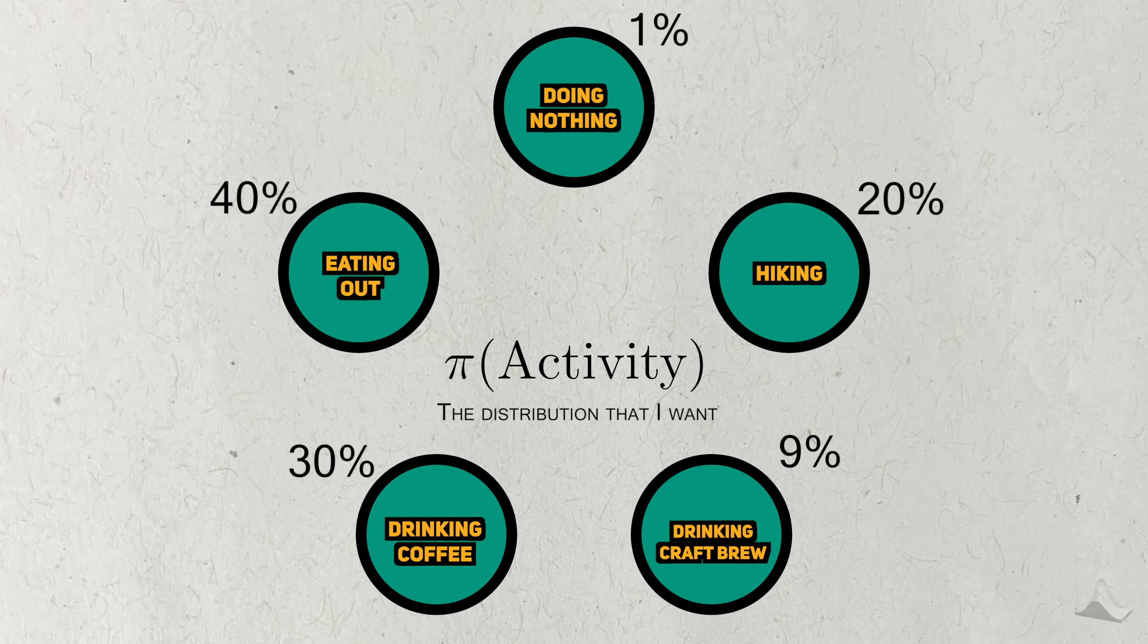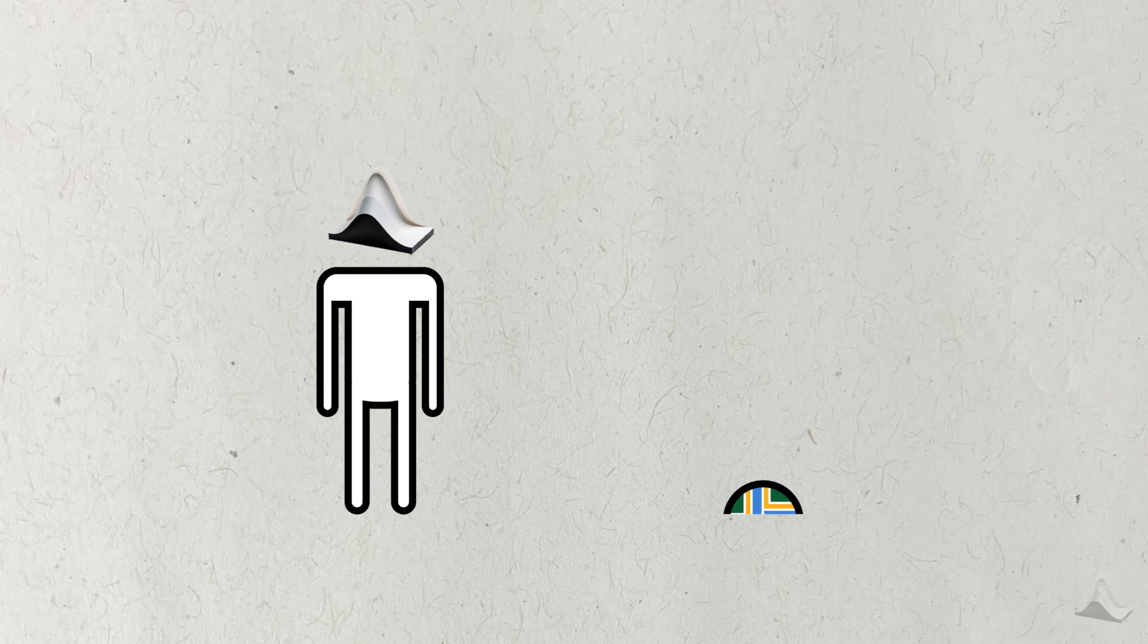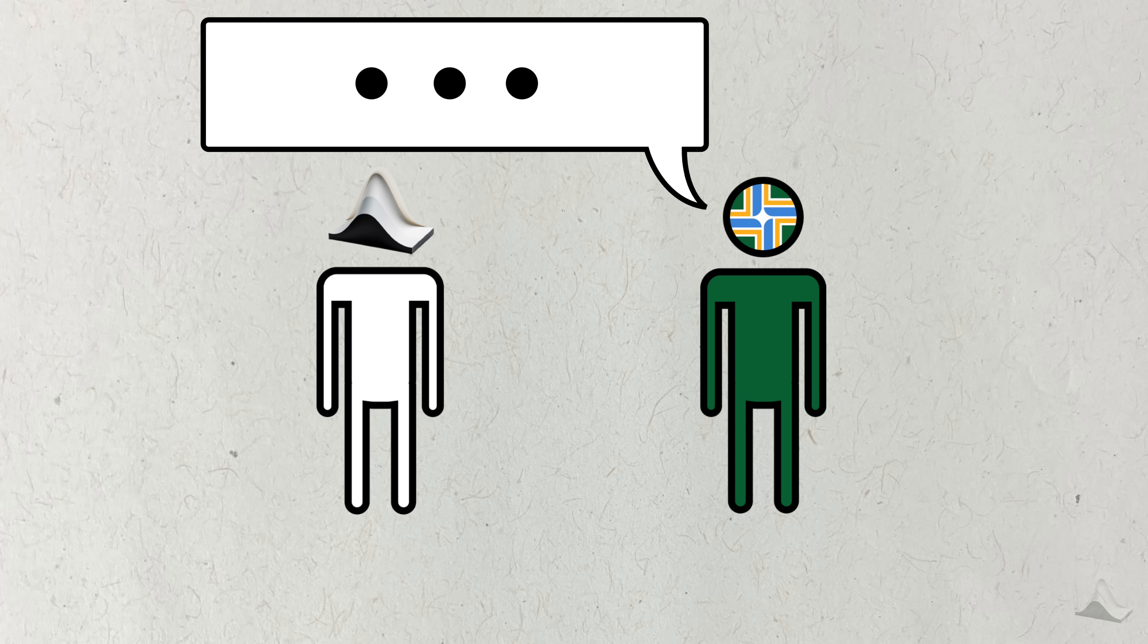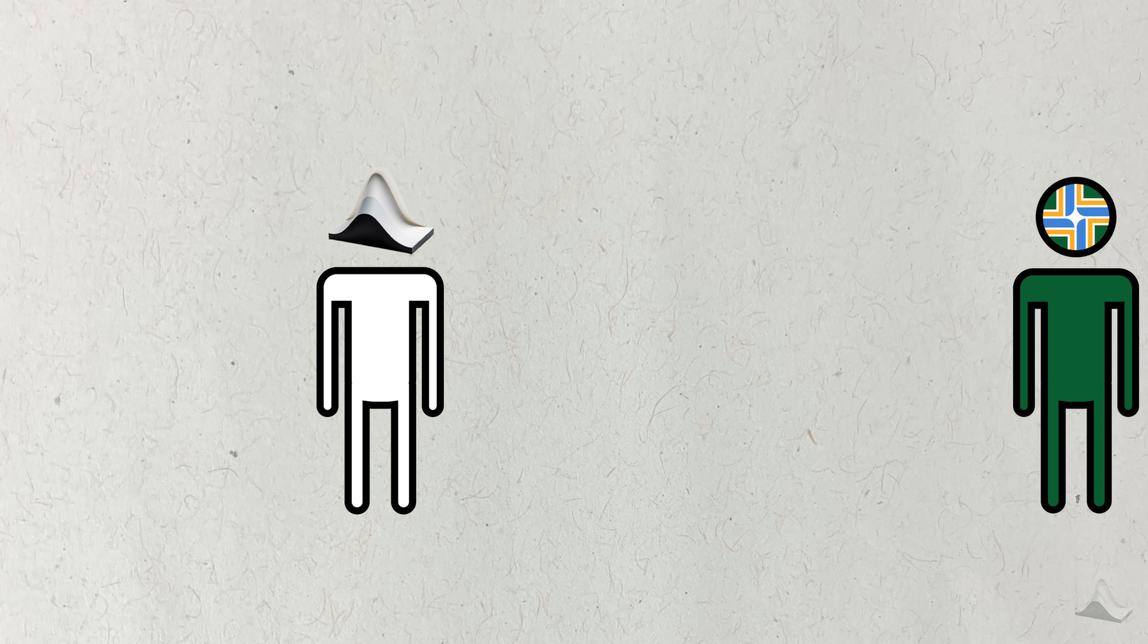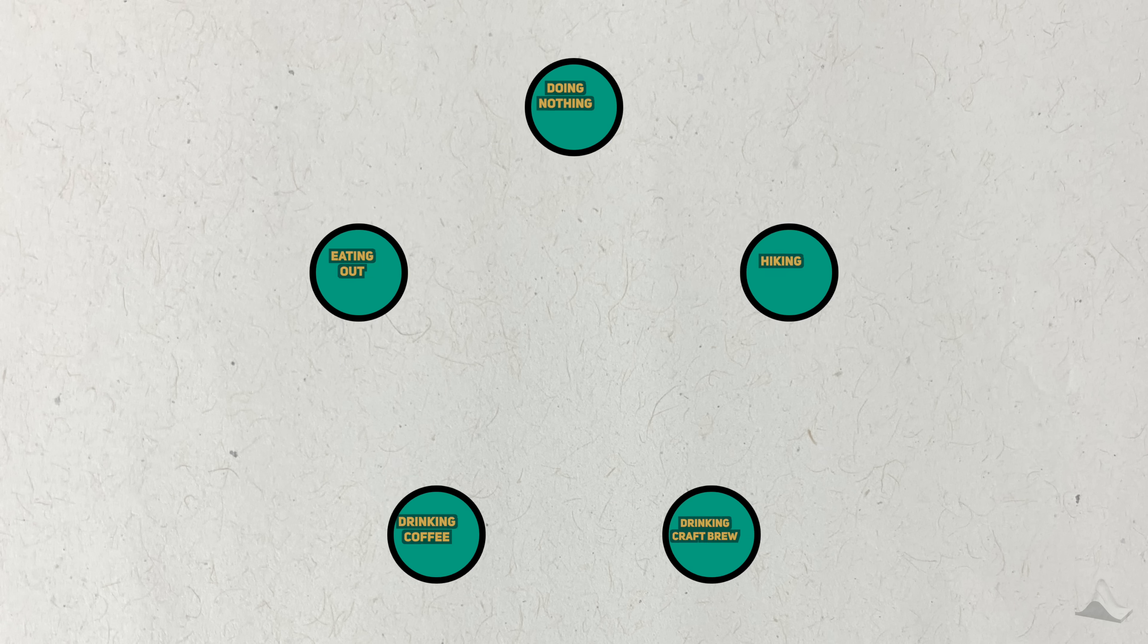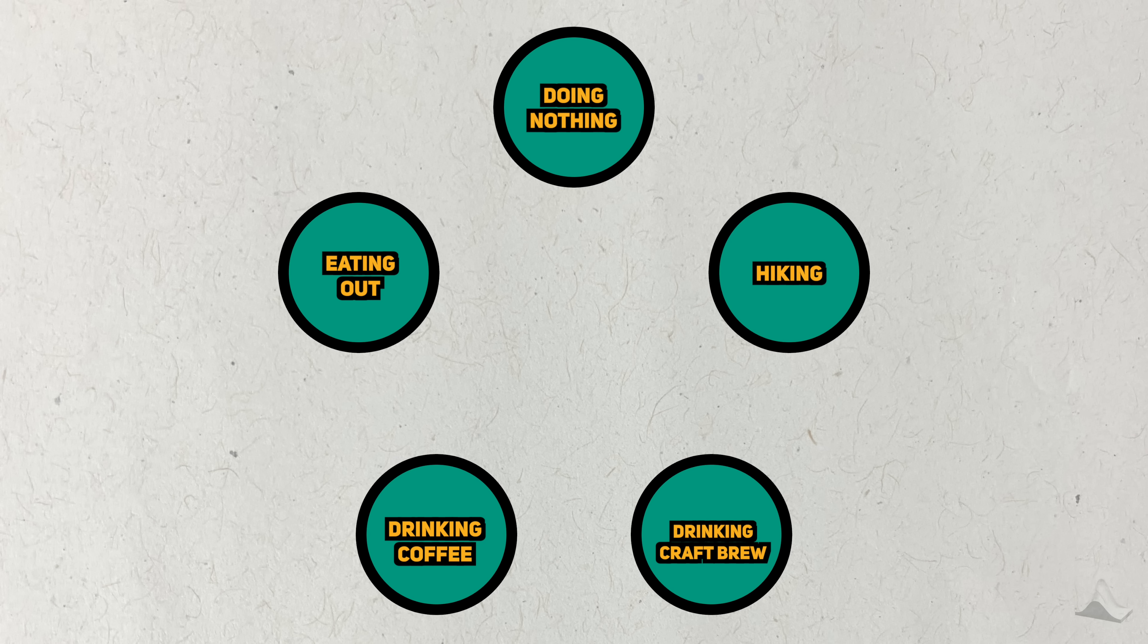My goal is to recreate this target distribution, a distribution of my time. But here's the problem. If you try to ask anyone how they spend their time, no one is going to be able to tell you these exact proportions like I've described. The Metropolis algorithm says that that's not a problem. First, I just need to pick an activity to start. I drink a lot of coffee, so I'm going to start there. I'll spend a fixed amount of time enjoying the vibes, and then it'll be time to figure out where to go next.